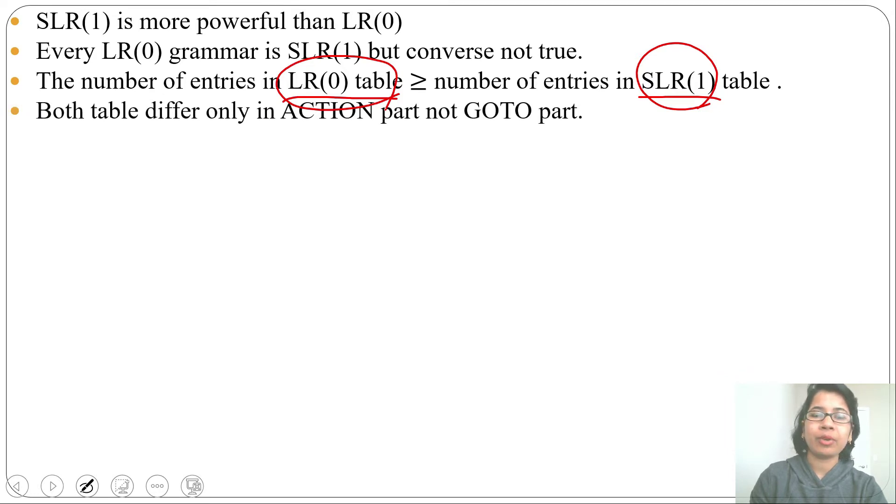Both tables differ only in action part, not goto part. Goto part is same. Only in action, in reduction entry, it differs. SLR1 is more efficient than LR0.